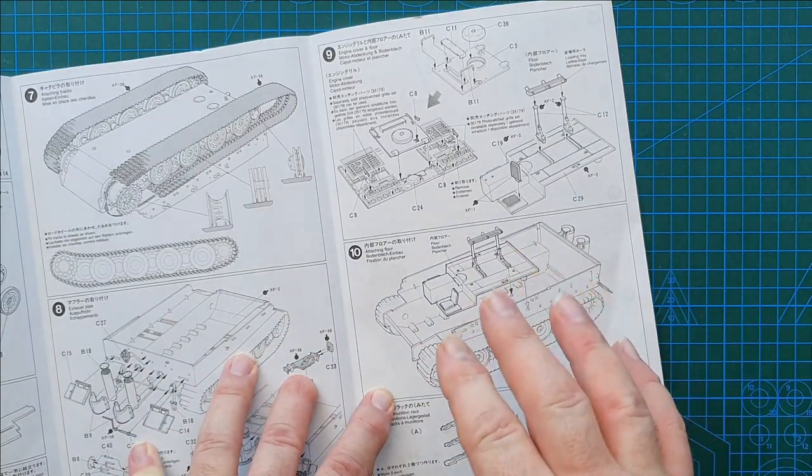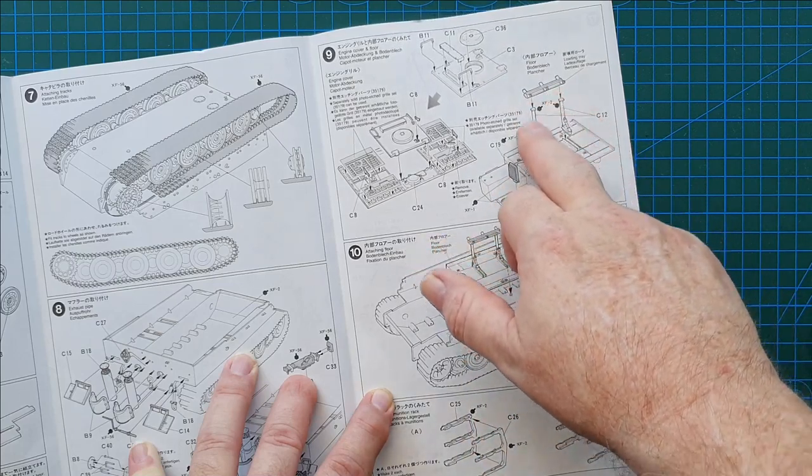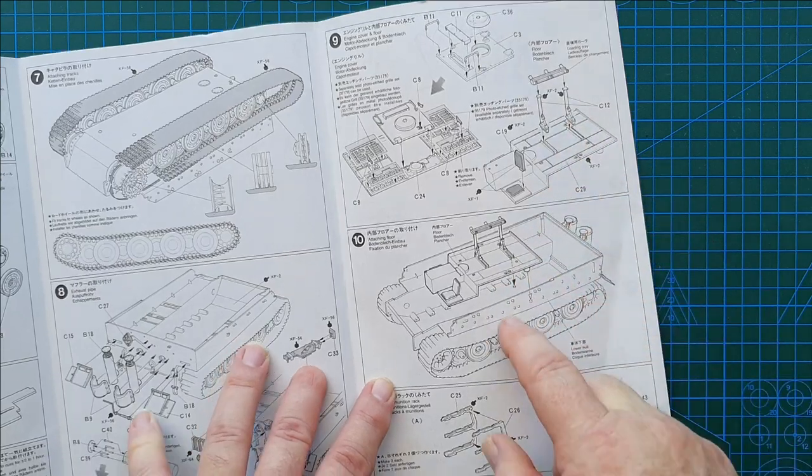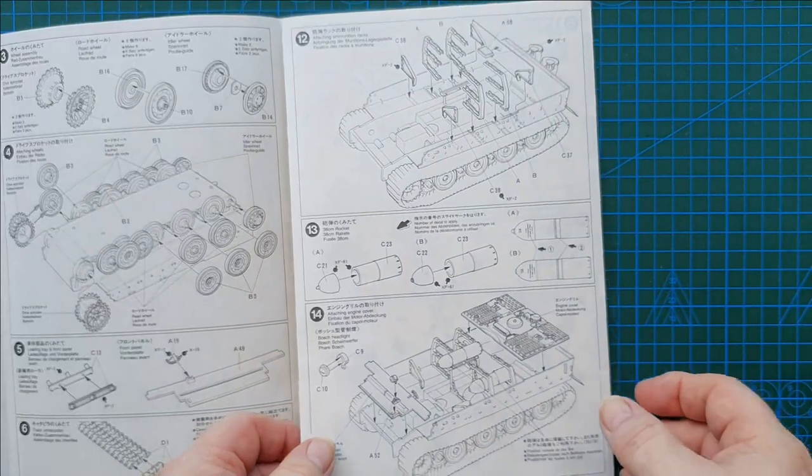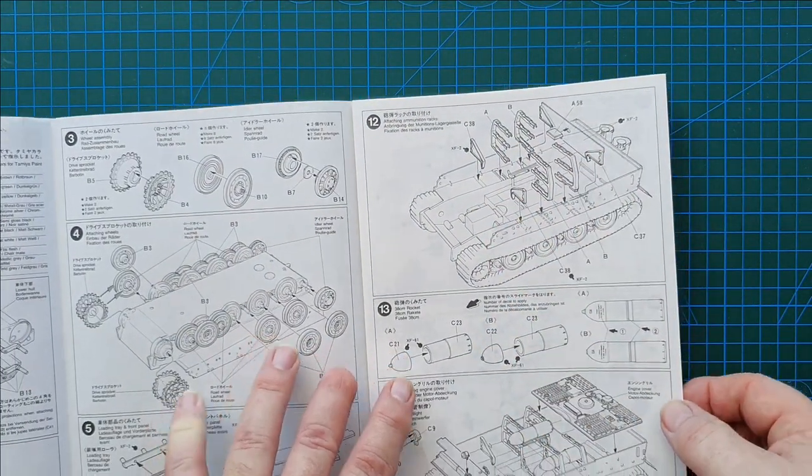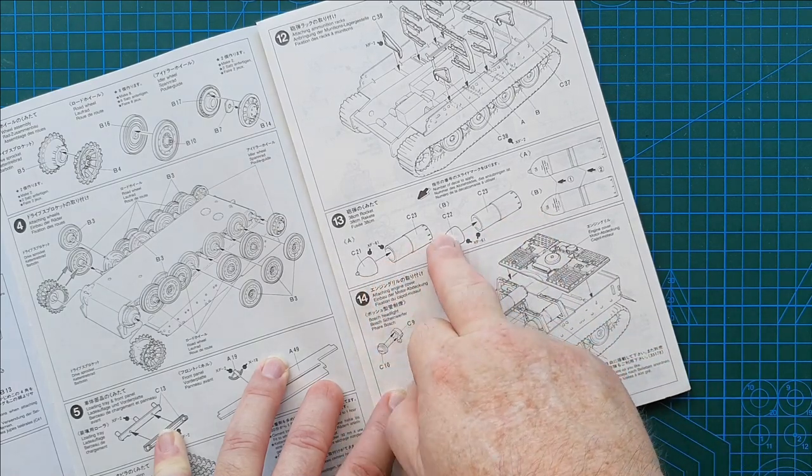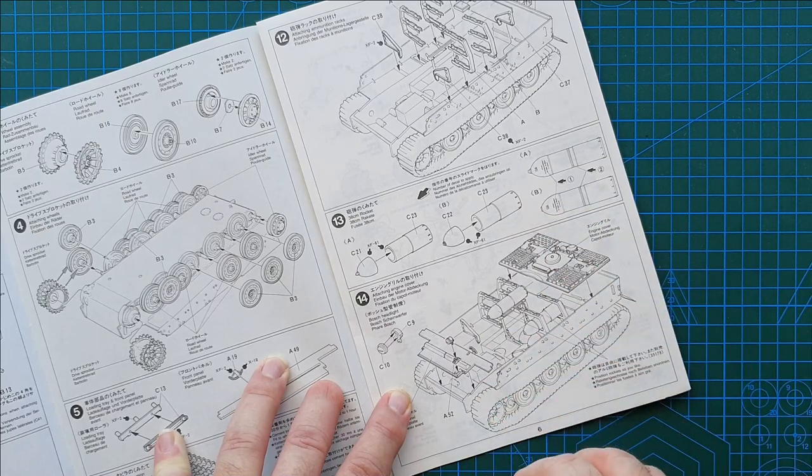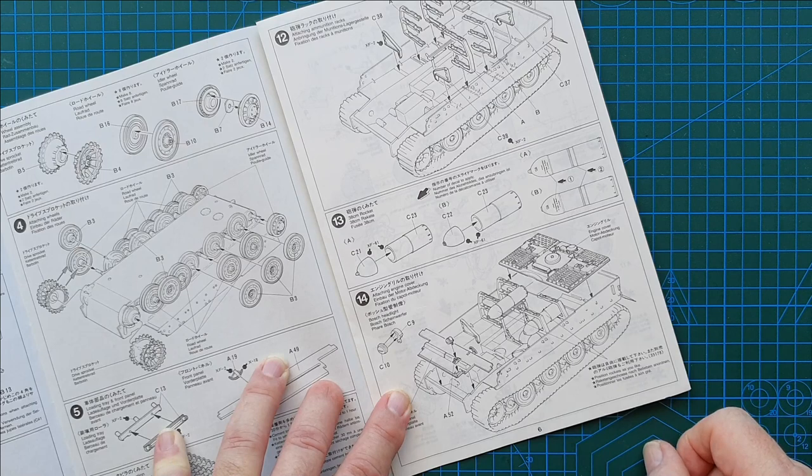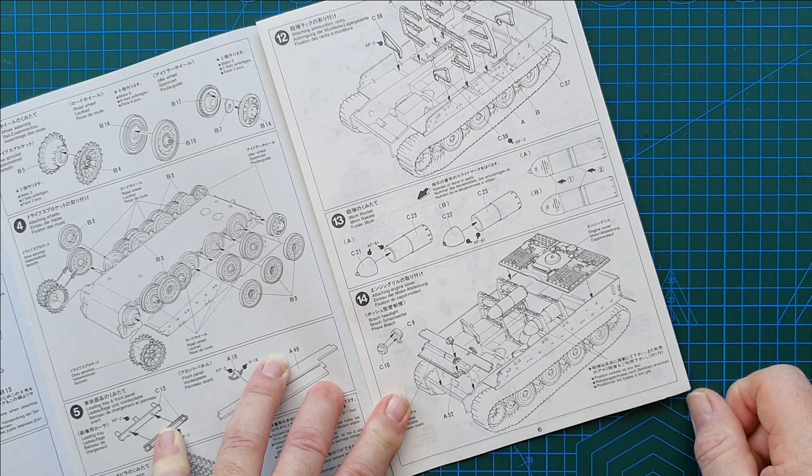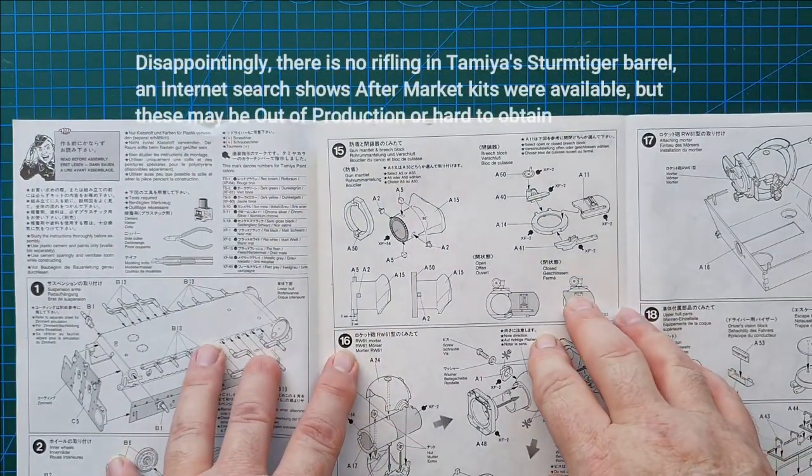This does have a very basic interior. As you can see, this is your floor interior, loading rack for the rockets. You've got a driver's seat and ammunition racks for the actual rockets themselves. That all goes inside before you put the top of the hull on. You do get four rockets. It tells you what color to paint them and you get decals for the rockets as well. Really nice - it means you can have the hatch open and see the basic interior. If you want to upgrade the interior, you'll have to use internet references.